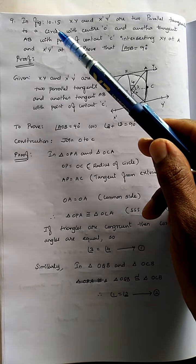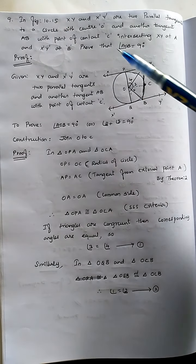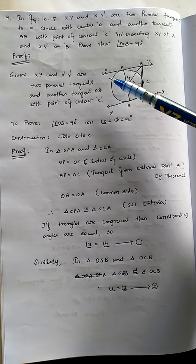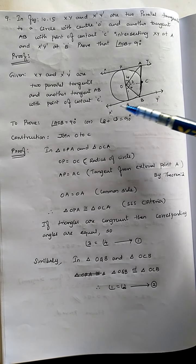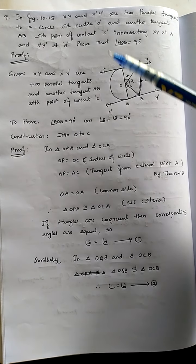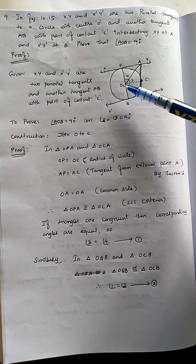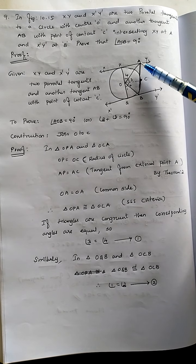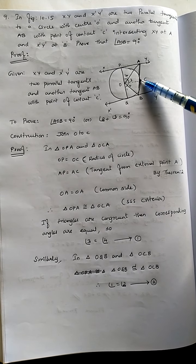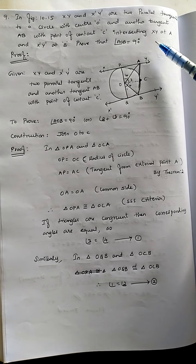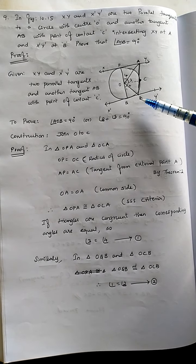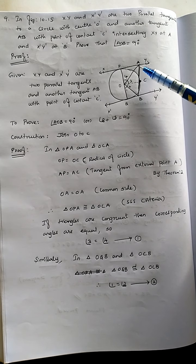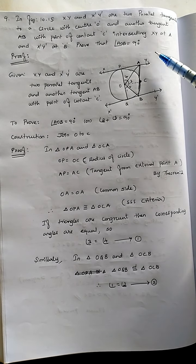In figure 10.15, XY and X'Y' are two parallel tangents to a circle with center O. Another tangent AB with point of contact C intersects XY at point A and X'Y' at point B.